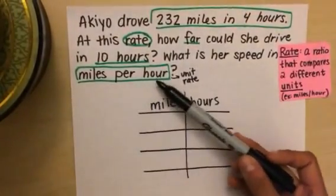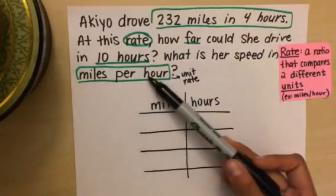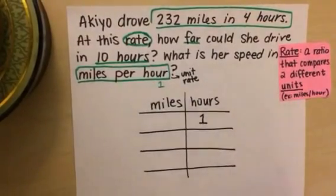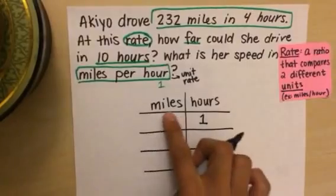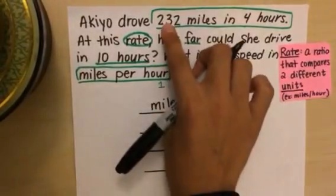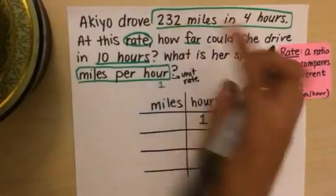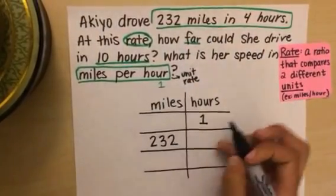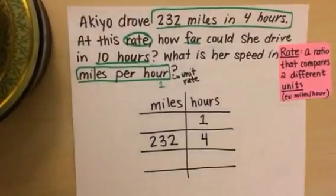So we know that we are going to be looking for her speed in miles per hour. So I'm going to fill that in as one hour. Since I don't know how many miles she's driven yet, I'm going to leave that blank. The next thing I'm going to fill in is the rate that they give me, 232 miles in four hours.